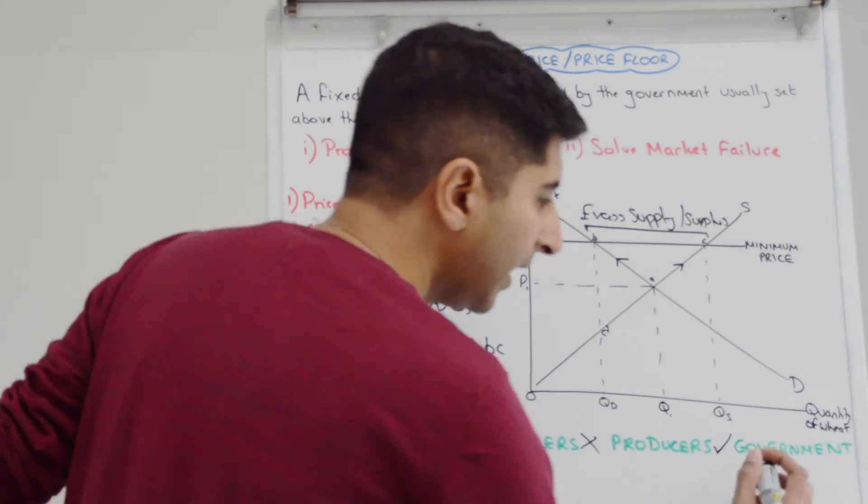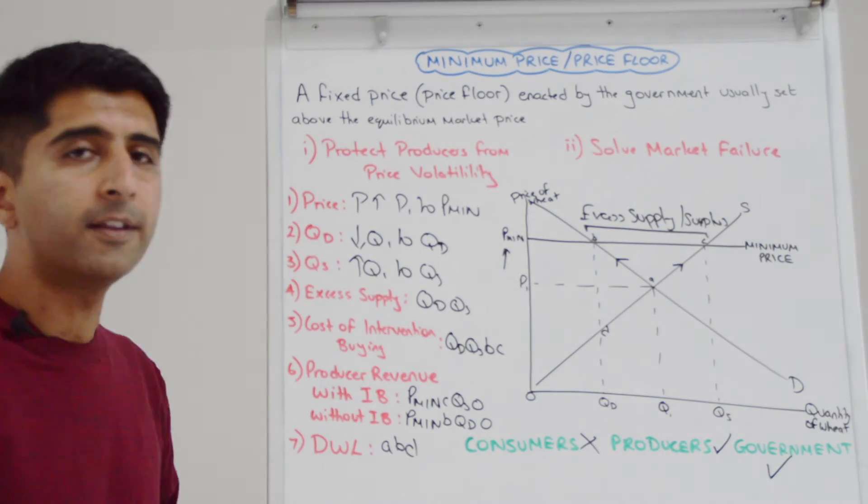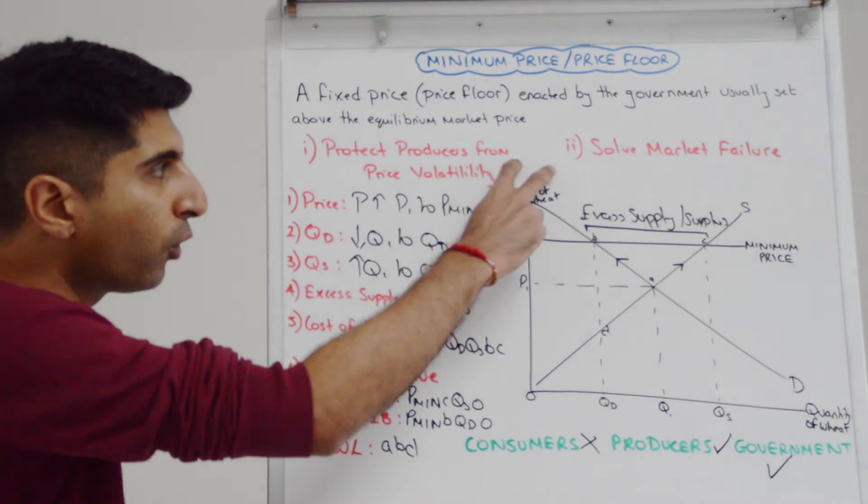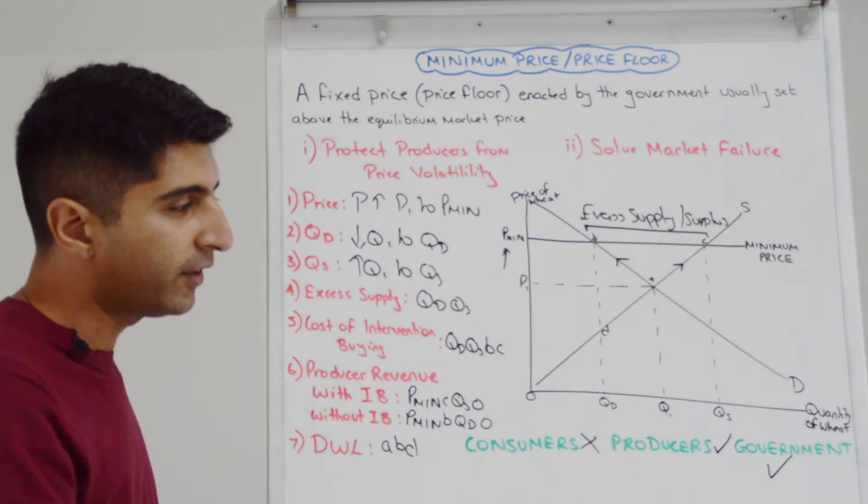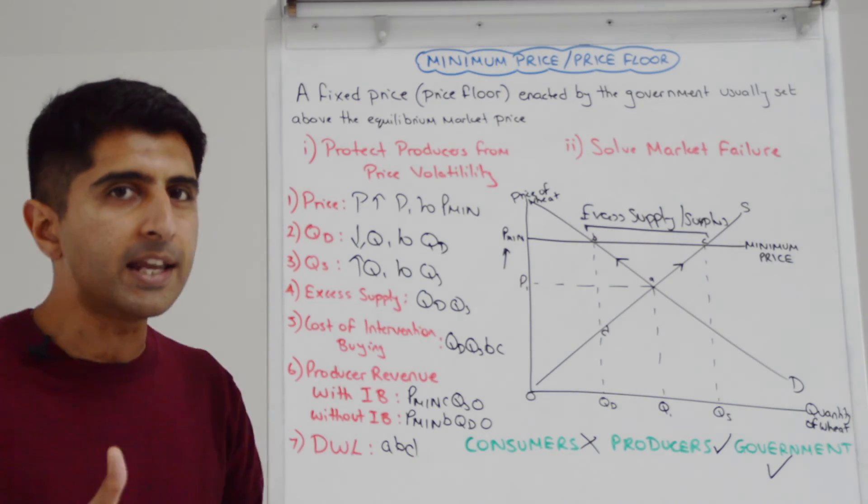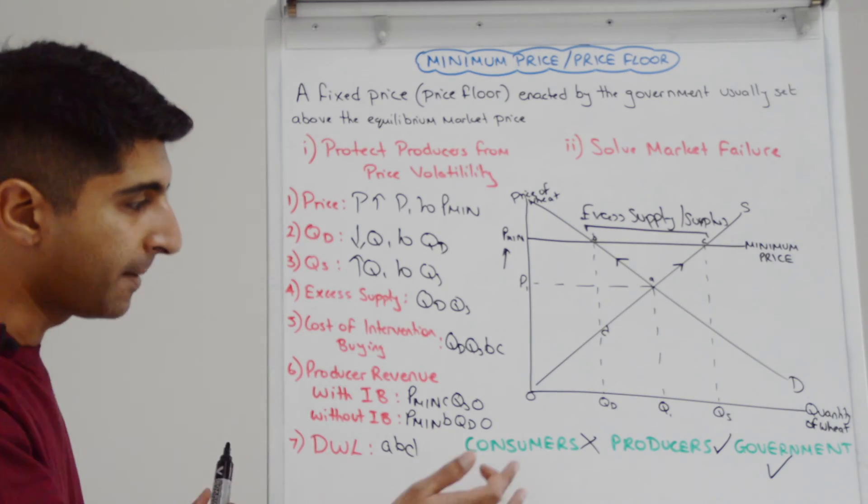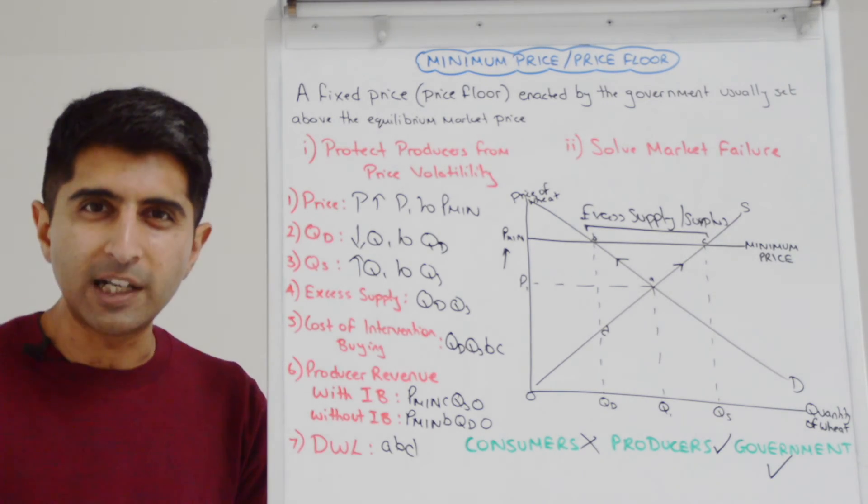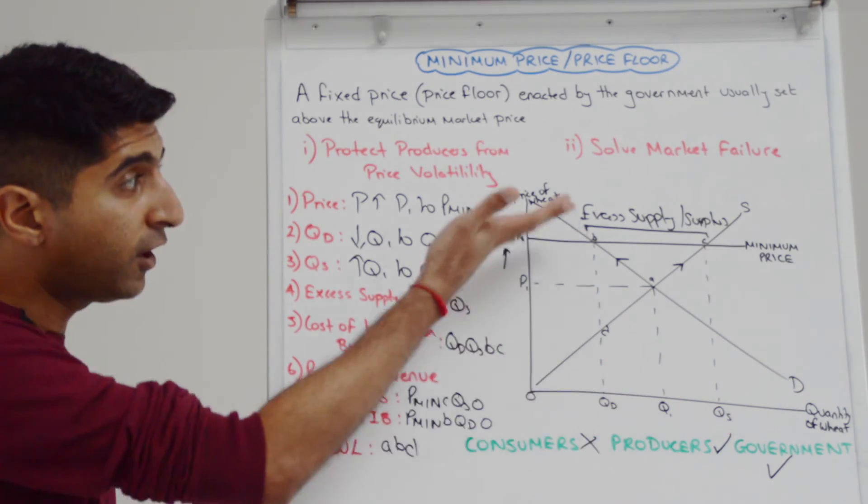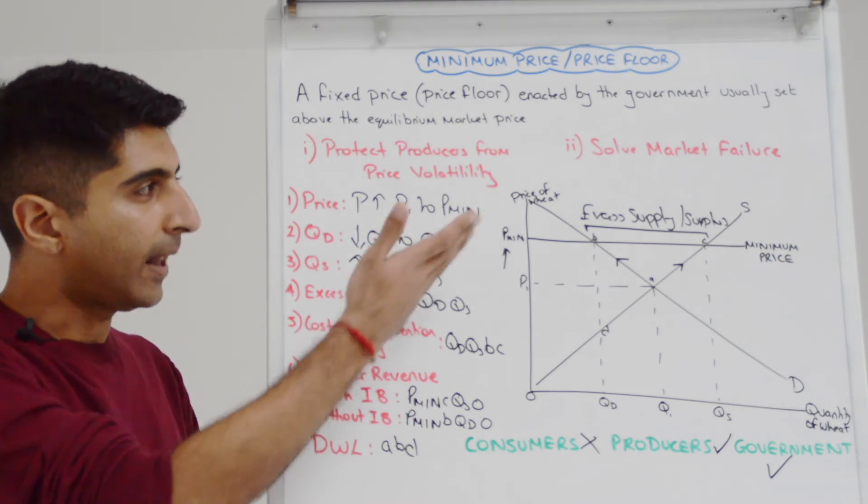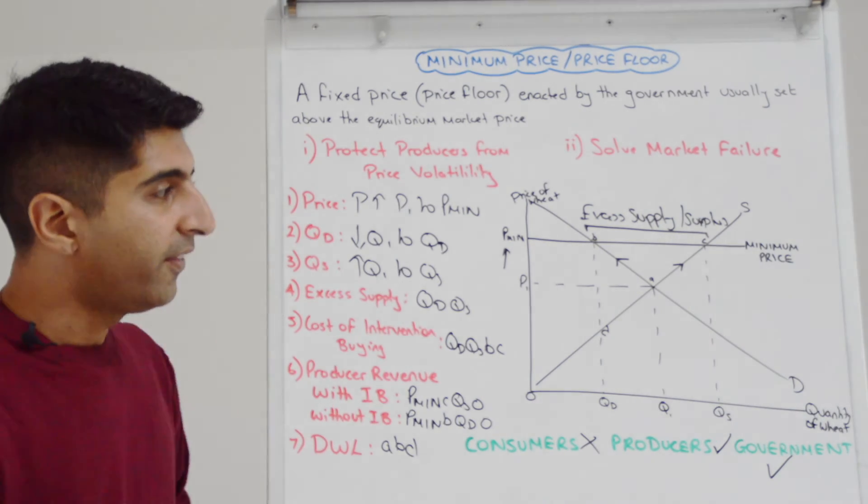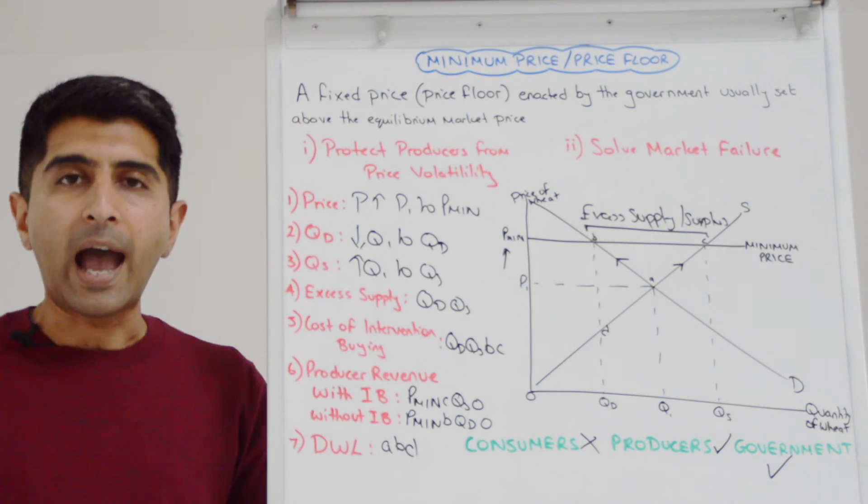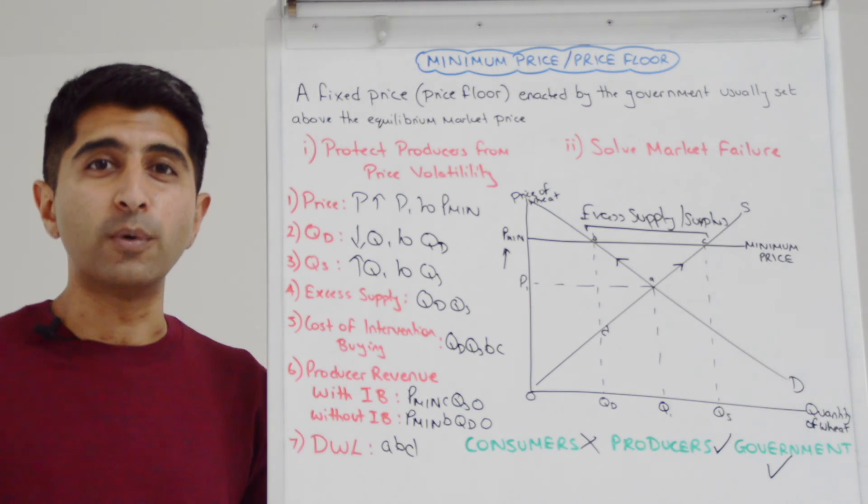What about the government? Well, in theory, we can say the governments would like minimum prices if their core goals are being reached. If they're protecting producers, they're keeping an industry going. If they're solving key market failures, like we said, great. But they will be very concerned about the impact on consumers, especially the regressive impact. They'll be concerned of unintended consequences like black markets forming because of higher prices. They'll also be concerned about the intervention buying cost. And we've already talked about the funding issues with that.